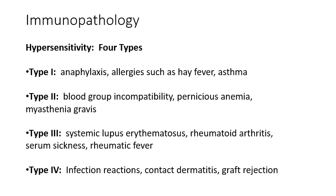We're mostly going to focus on hypersensitivities. There are four basic types, numbered type 1 through type 4. Type 1 are allergies — atopic allergic reactions, anaphylaxis, asthma. Type 2 hypersensitivity includes blood group incompatibility, pernicious anemia, myasthenia gravis, and erythroblastosis fetalis. Type 3 hypersensitivities are immune complex reactions, such as rheumatoid arthritis or lupus. Type 4 hypersensitivities are delayed hypersensitivities, like contact dermatitis or graft rejection.